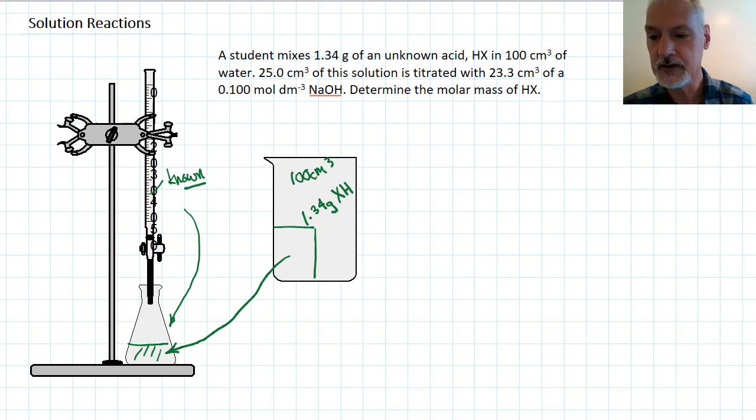Now we carefully add our known, which in this case is the sodium hydroxide solution. We put in 23.3 cubic centimeters of this solution, which is just enough to completely react with the unknown acid down below. The concentration of this solution is 0.100 moles per decimeter cubed.